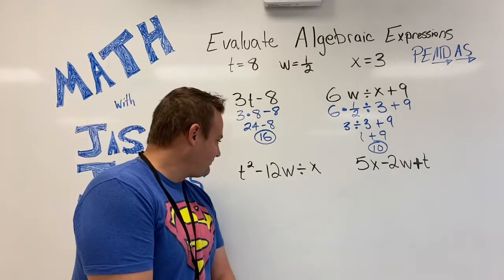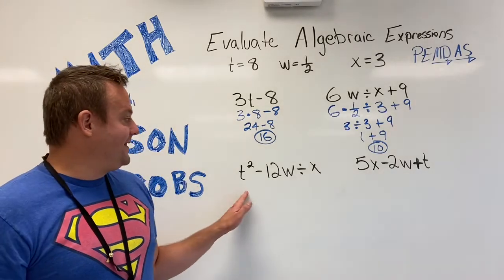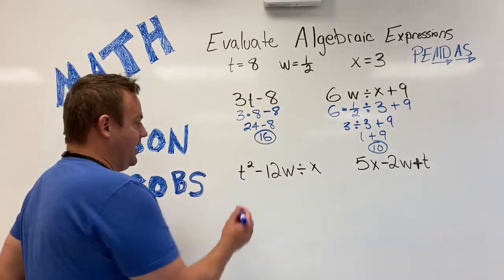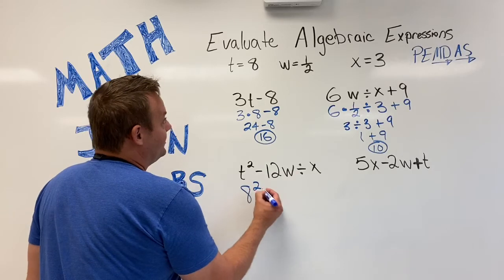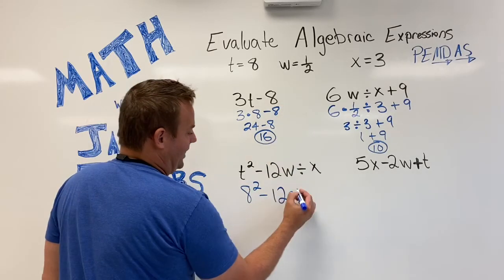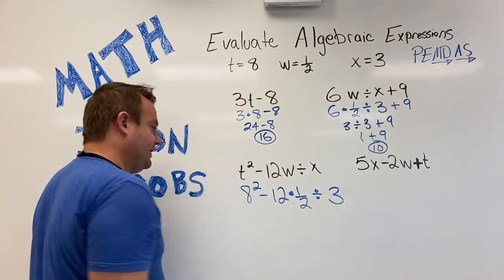Let's go on to this one. First step. Write this out numerically. Substitute these values in. So we got 8 squared minus 12 times w. w is 1 half. Divide it by 3.